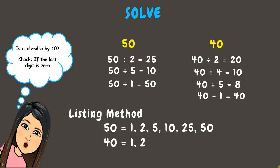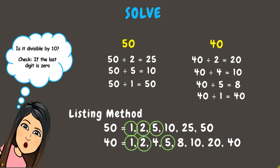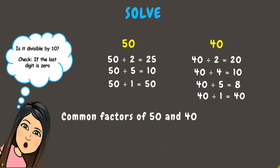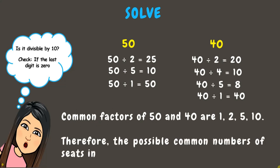For 40, the factors are 1, 2, 4, 5, 8, 10, 20, and 40. The common factors of 40 and 50 are 1, 2, 5, and 10. Therefore, the possible common numbers of seats in each row are 1, 2, 5, and 10.